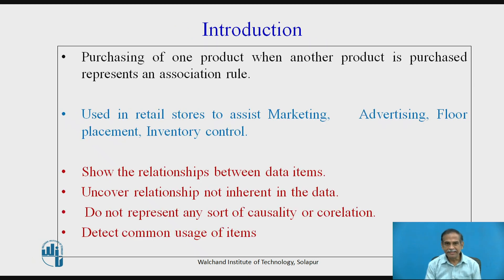Purchasing one product when another product is purchased represents an association rule because it is based on market basket analysis. These are used in retail stores to assist marketing. Association rules are very frequently used in advertising, floor placement, and inventory control applications. They show the relationships between data items and uncover relationships not inherent in the particular data, but which might be hidden in it.